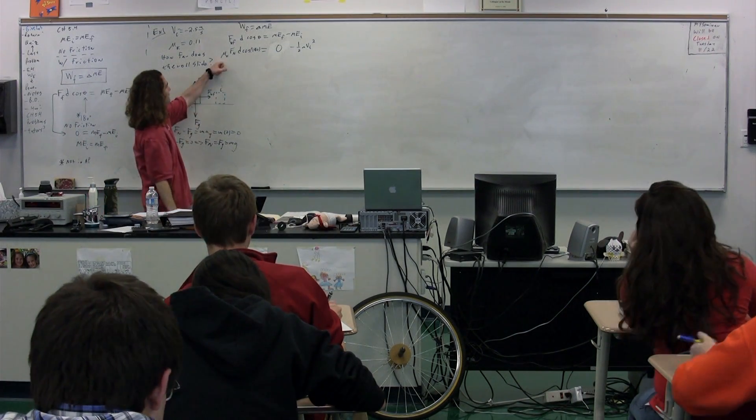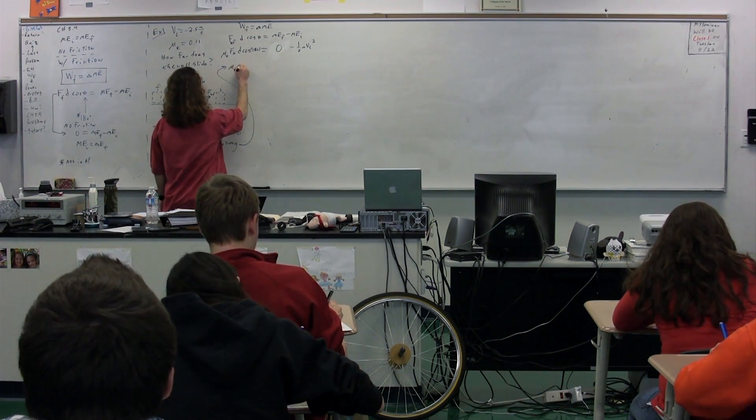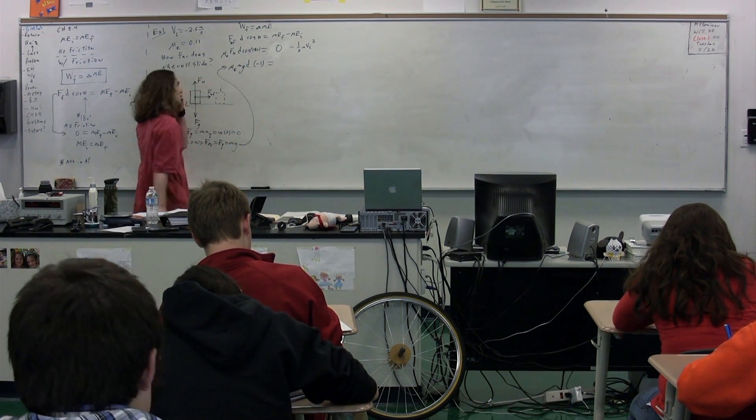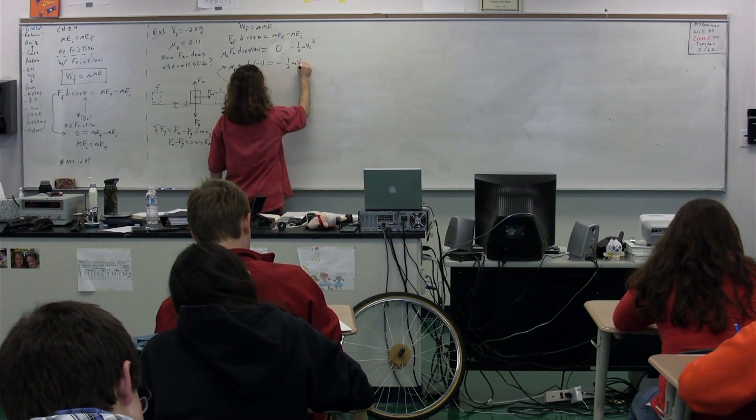We can now substitute that back into our work equation up here. We get mu_k times m times g times d times negative 1 because the cosine of 180 is negative 1, is equal to negative 1/2 times the mass times the velocity initial squared.